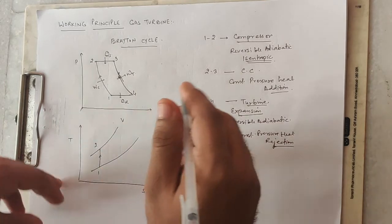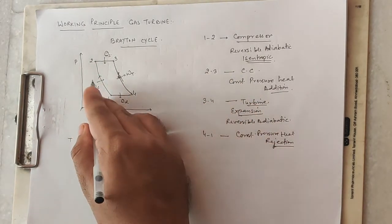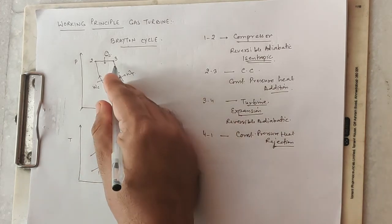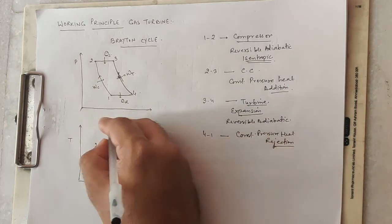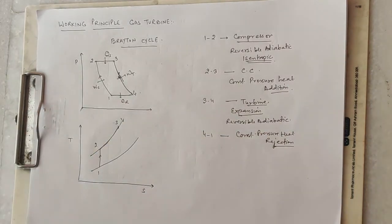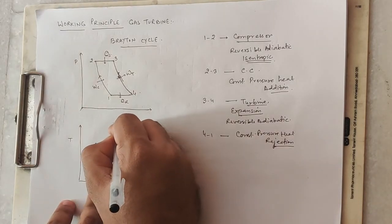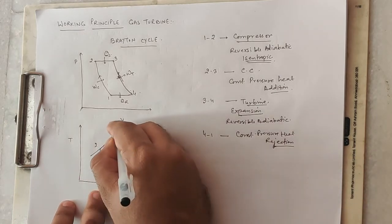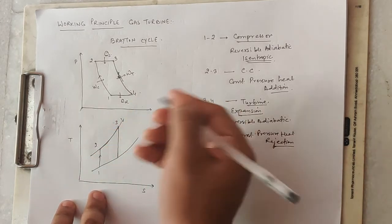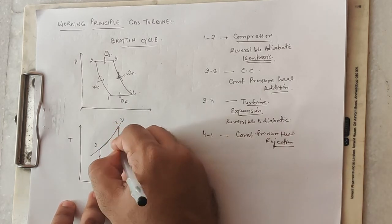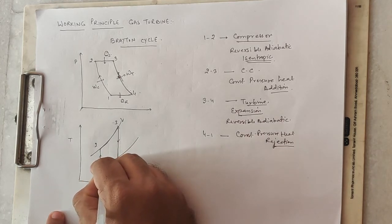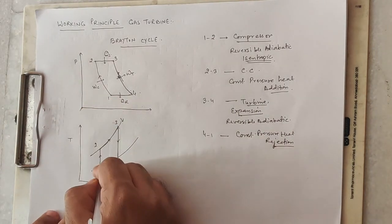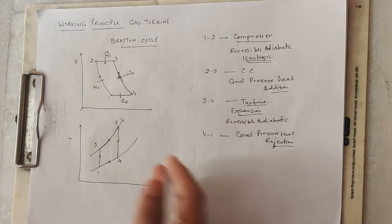On the TS diagram, process 1 to 2 is a vertical line. Process 2 to 3 is along the same constant pressure line — heat addition causes the temperature to increase. From 3 to 4 is a reversible adiabatic expansion — isentropic expansion — giving work output. Process 4 to 1 is constant pressure heat rejection where temperature decreases. This is how we plot the gas turbine cycle on the TS diagram.